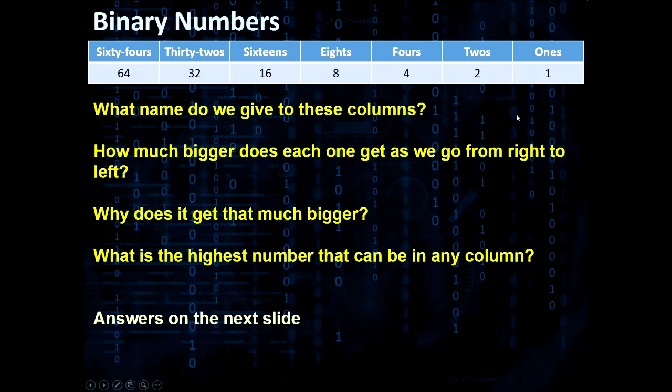What's the highest number that can be in any column? 1. Because we don't have any other symbols, then we would go 0 and 1, then we've got to go into the next place value to make our other numbers.